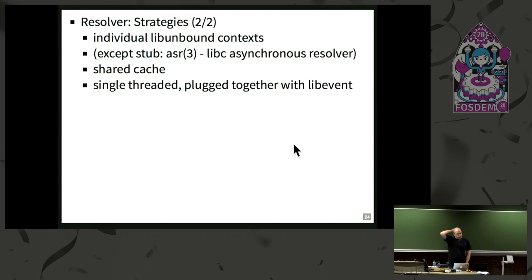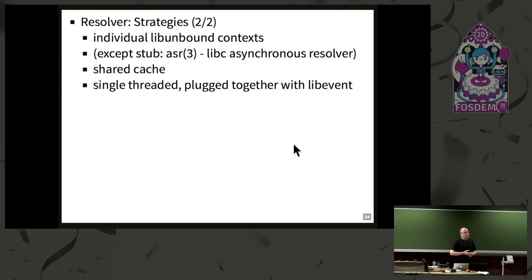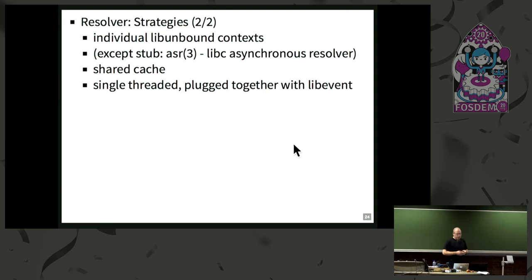All the strategies run off individual libunbound contexts — one can do its own recursion, the other talks to a forwarder. We found a way to have a shared cache, but we need to be careful: you can only share a cache if the contexts have the same quality, meaning they both need to be able to validate. If you try to share a cache between a strategy that doesn't validate and one that does — because signatures are stripped — really interesting things happen. And this is all single-threaded, plugged in together with libevent.